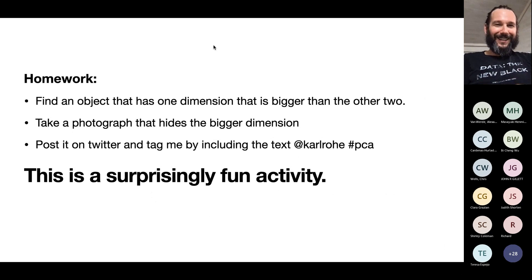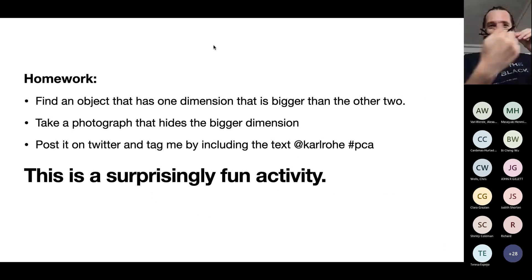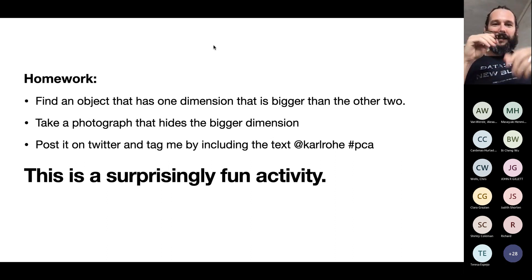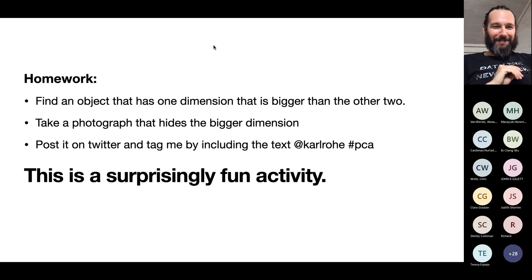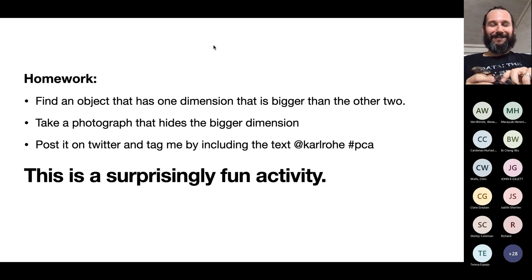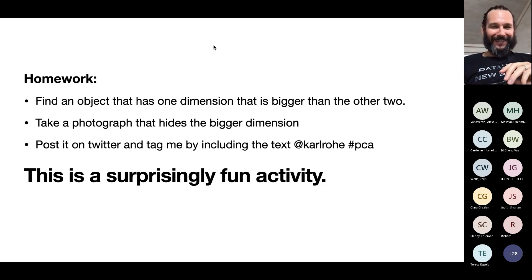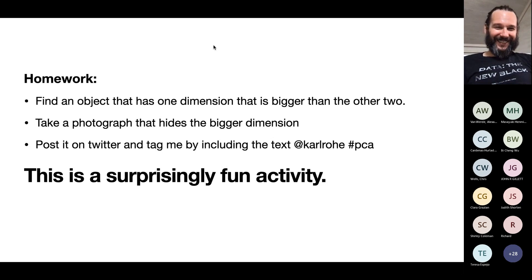So you have homework for the talk: find an object that has one dimension bigger than the others — like my glasses, which are bigger in this dimension than either of the other two. Hide that longer dimension, take a photo, and post it on Twitter. Tag me at Karl Rowe and include the hashtag PCA. Hopefully we get a few of these and can put them all together.